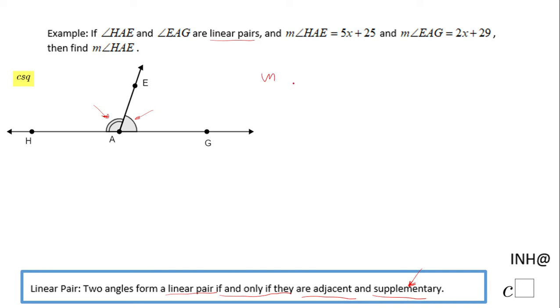The measure of angle HAE plus the measure of angle EAG is 180 degrees.